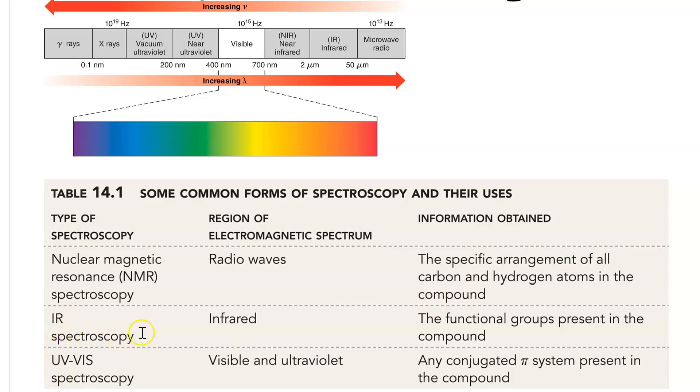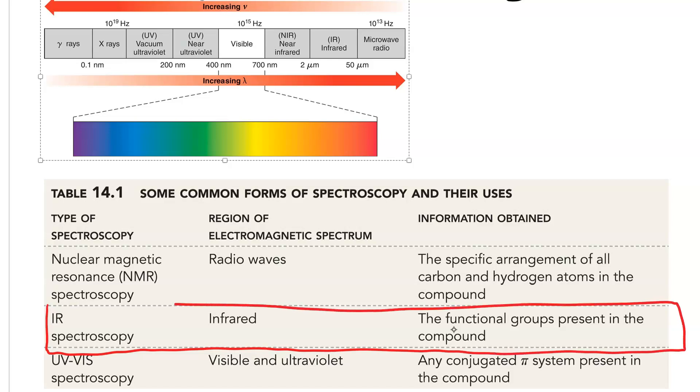IR spectroscopy uses infrared at higher energy than microwave, so it's a higher energy spectroscopy than NMR. It tells us the functional groups present in the compound. And this is what we're going to focus on in this section of the class.